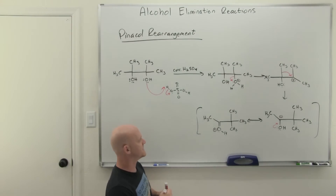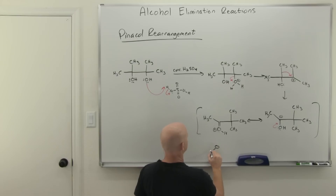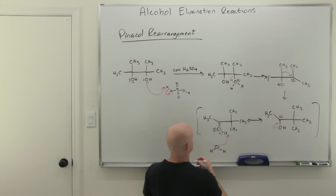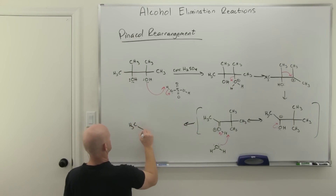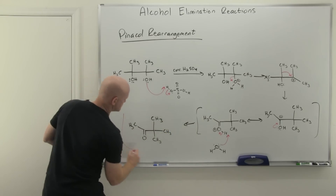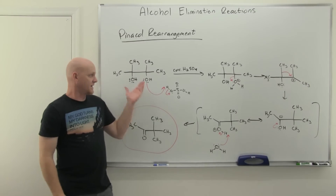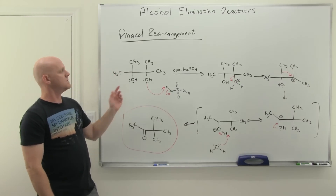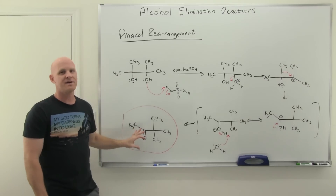All we simply do is deprotonate this hydrogen and we'll have a ketone. The ketone is your product of the Pinacol rearrangement — water was lost in the process. So recognize the pattern: vicinal diol plus concentrated H2SO4 means a funky rearrangement is happening and you'll end up with a ketone as the final product.